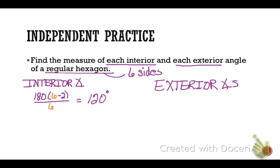To find the exterior angle, I'm going to just take 360, and since it is a regular polygon, I can divide by the number of sides. So 360 divided by 6 is going to give me 60 degrees.